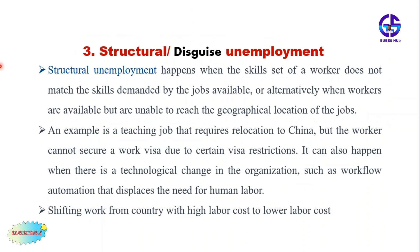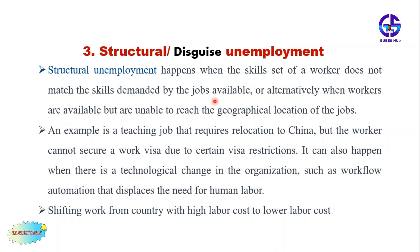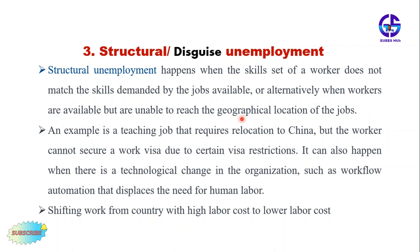Structural or disuse unemployment happens when the skill set of a worker doesn't match the skills demanded by the jobs available, or alternatively when workers are available but are unable to reach the geographical location of the job.